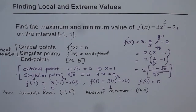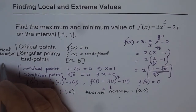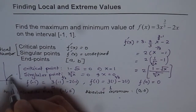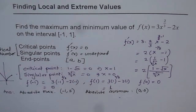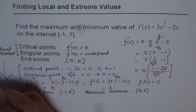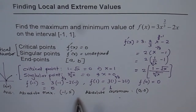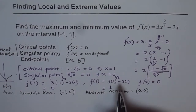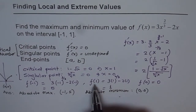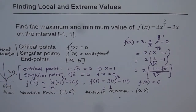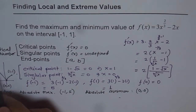If you draw this function, you'll see it looks something like this. Let me sketch it. We have the point (-1, 5), the origin (0, 0), and at x = 1 we get the point (1, 1). From the sketch, you can clearly see we have the absolute maximum and absolute minimum.